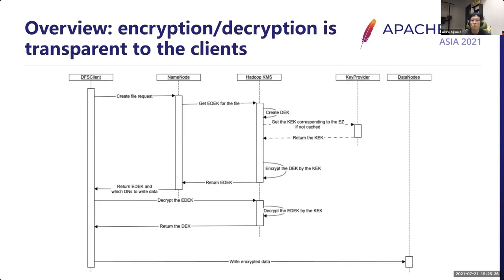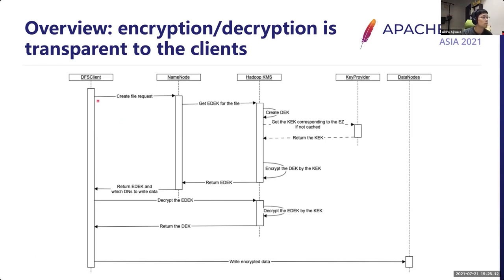This is a sequence diagram for writing encrypted data to HDFS. There are various processes executed internally in the DFS client, but since these processes are executed inside Hadoop's DFS client, users do not need to implement these processes at all—there's no need to make any changes to your applications. That's why it is transparent. When a client creates a file in HDFS, the client first requests the name node to create a file. Then the name node gets an EDEK—encrypted data encryption key—for the file.